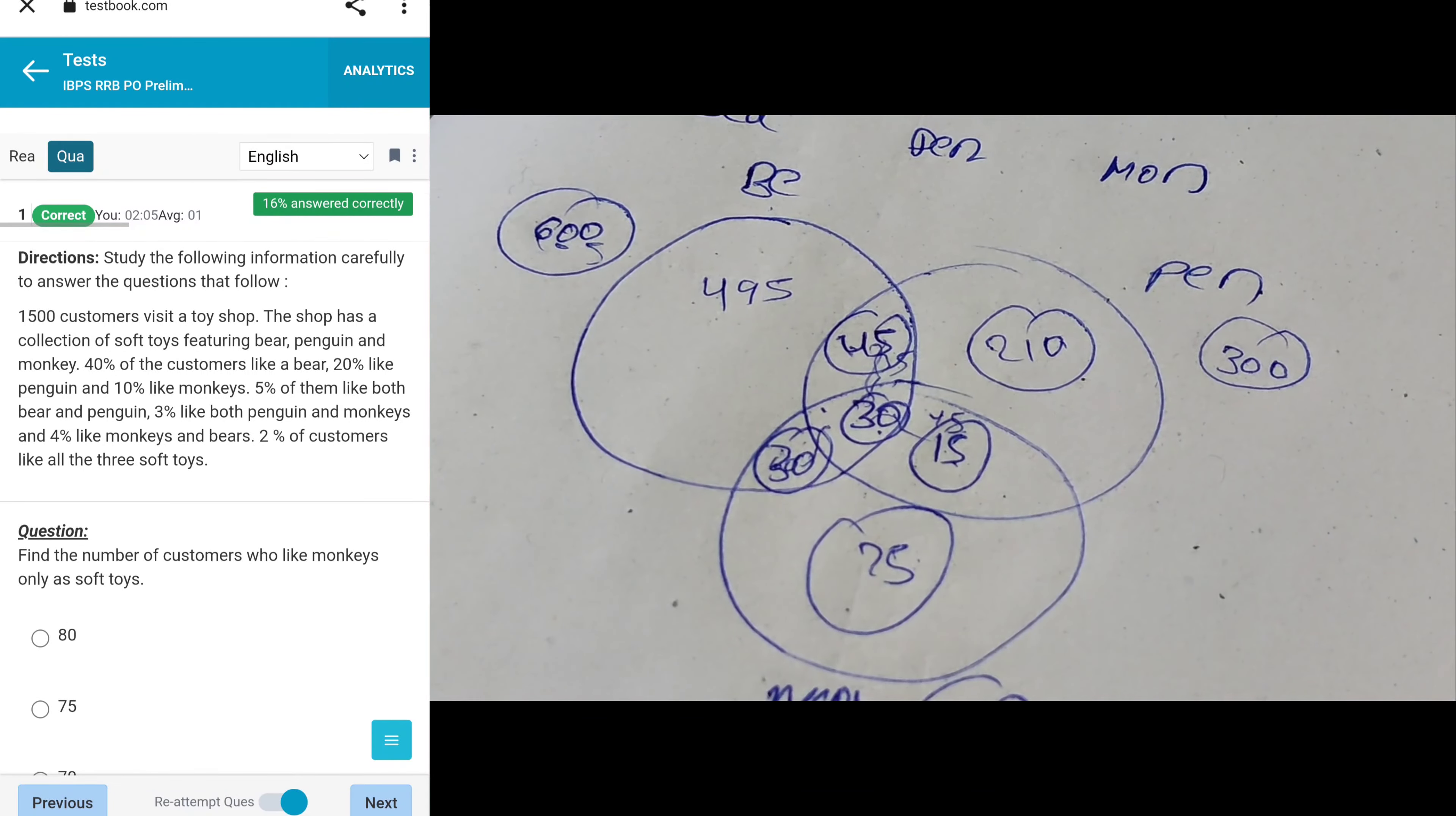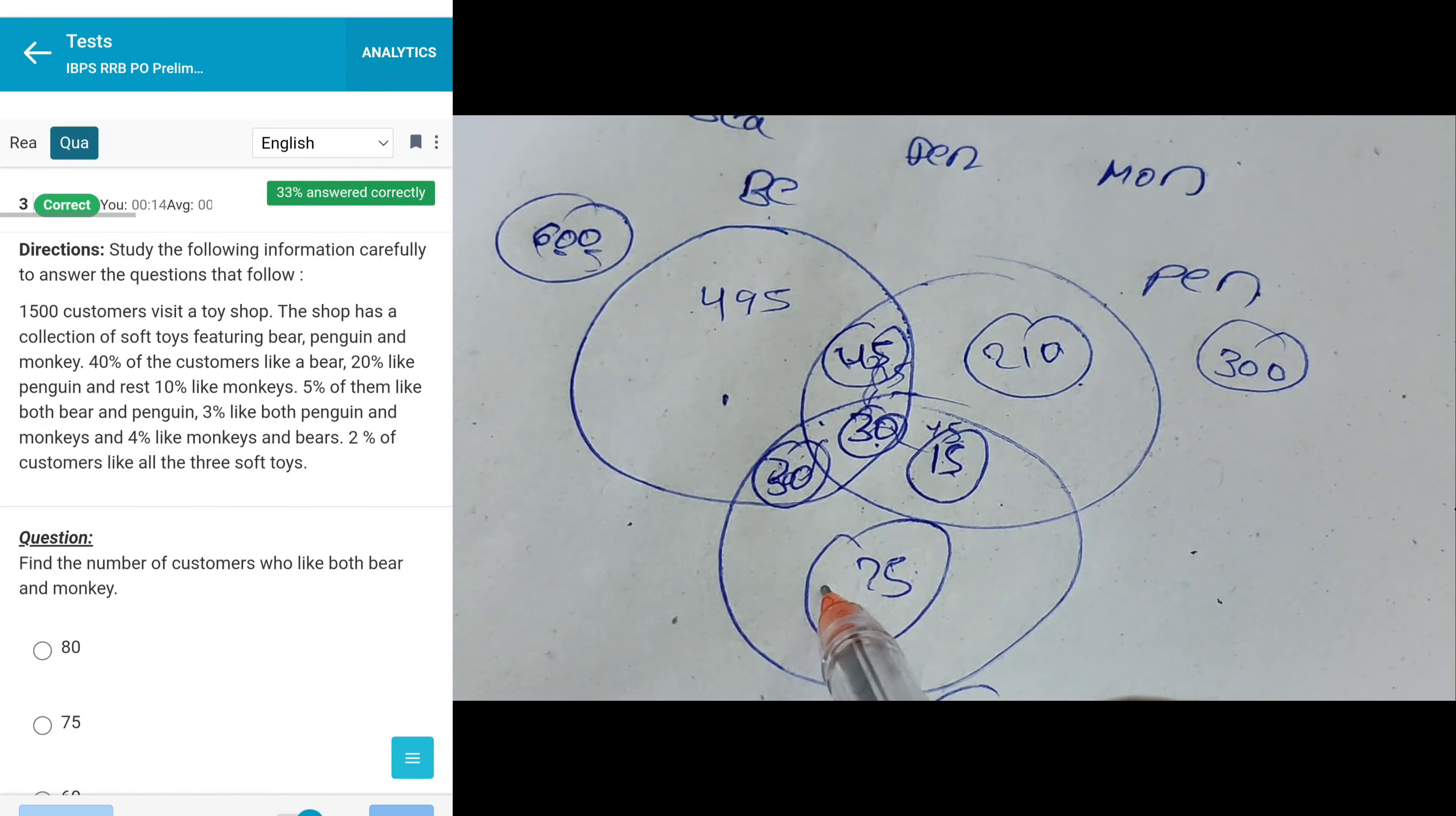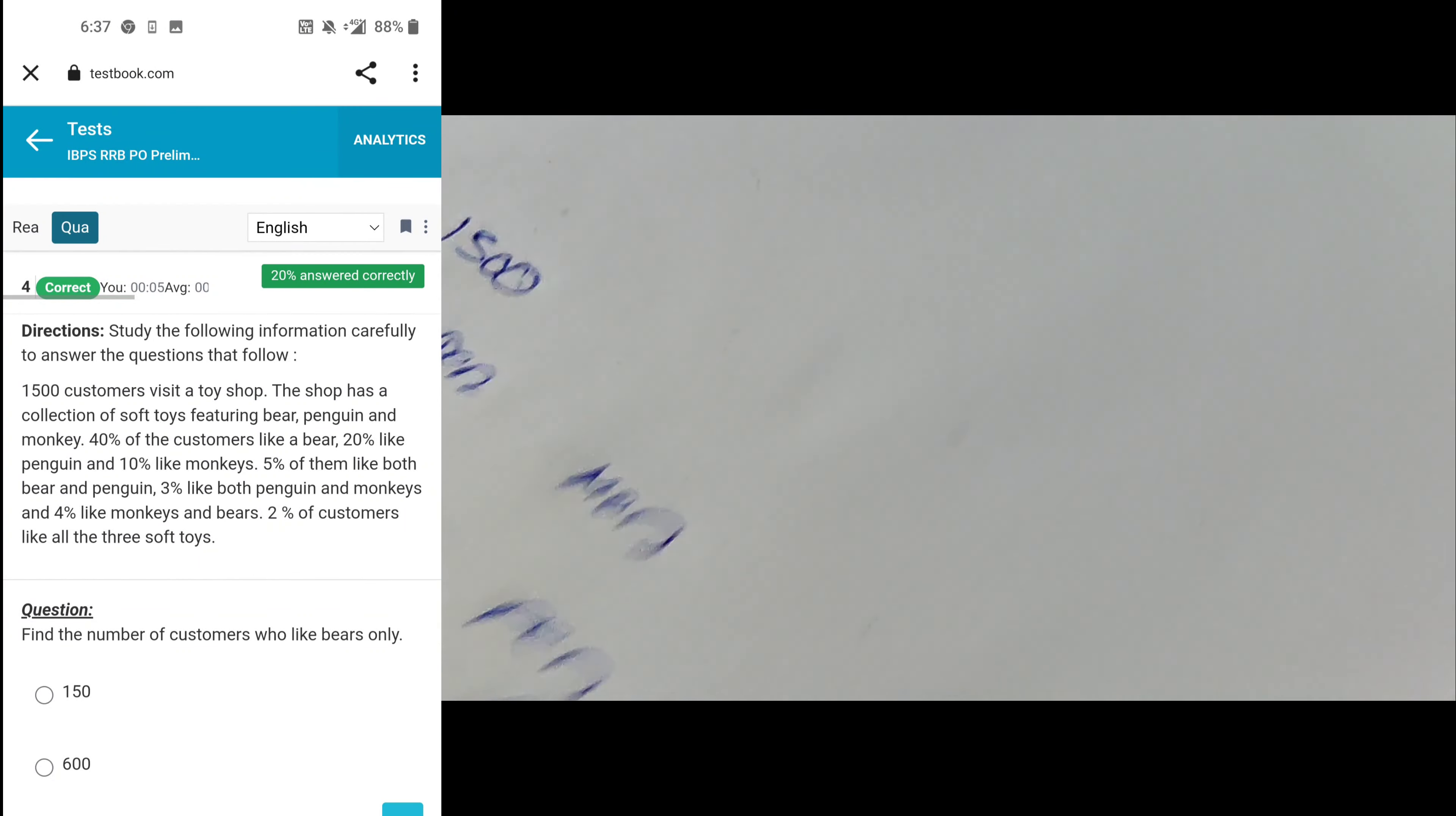Next, find the number who likes only monkeys - it's 75, option B. Next question, how many customers like only penguin? It's 210, option D. Find the number of customers who like both bear and monkey - overall it's 60. Next, find customers who like bears only - it's 495, option D.